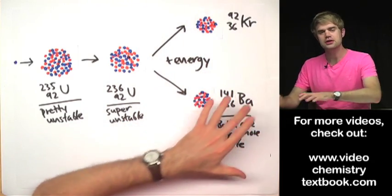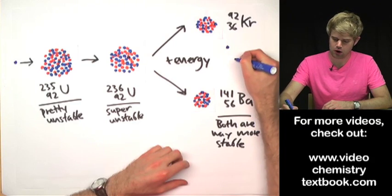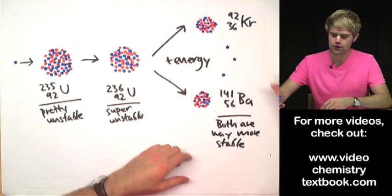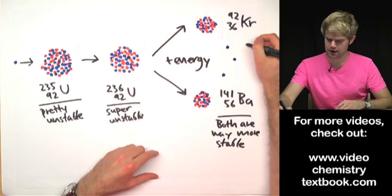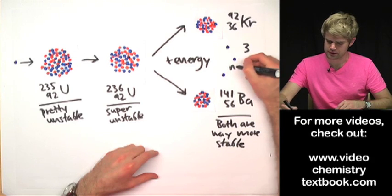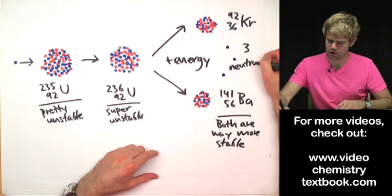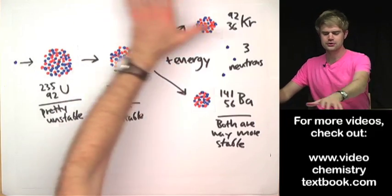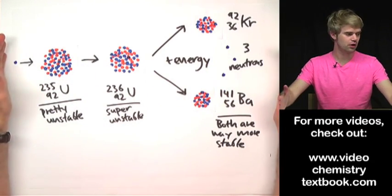Now this actually isn't the only thing that gets made. Also in the process, three neutrons, here they are right here, three neutrons also get created. So here's sort of a picture view of what's happening.